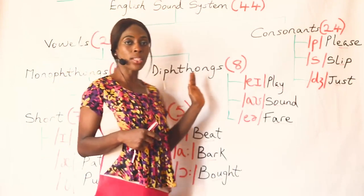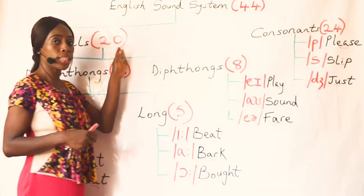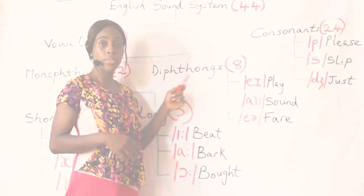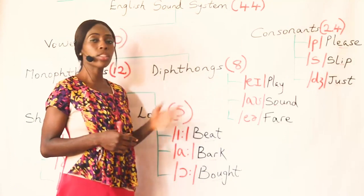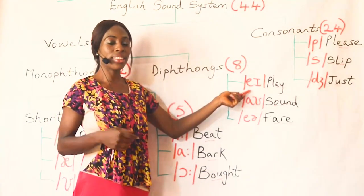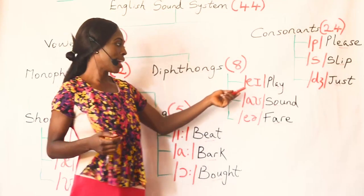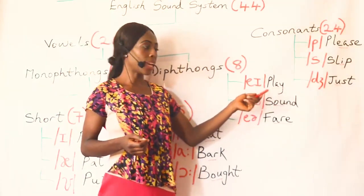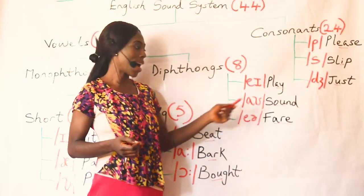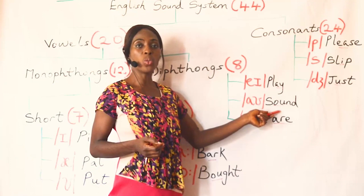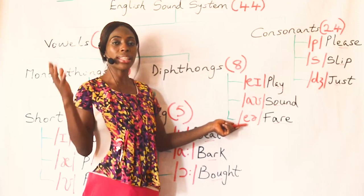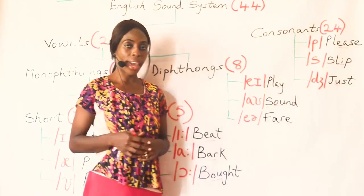Now the second part of the vowels: so the vowels are 20 — we've looked at the 12 monothongs, now the 8 diphthongs. Diphthongs are naturally long sounds, and we have 8 of them. Let's look at a few examples. We have /eɪ/ — the long sound of letter A — as in 'play.' Then we have /aʊ/ as in 'sound.' And we have /eə/ — like the air you breathe in — as in 'fair.'